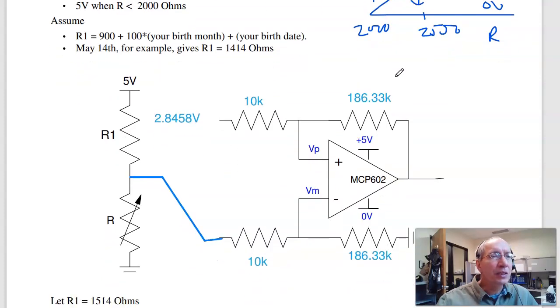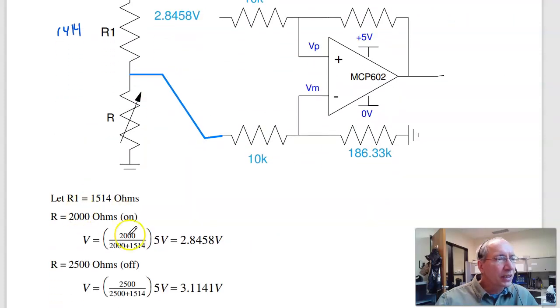Now the first step is convert resistance to voltage. Pick your favorite resistor. In this case it's based upon your birth date to make each test a little bit different. So this is 1414 ohms. Then the voltage at this point is going to be R1 over R1 plus R2 times 5 volts, 2.84 volts. At 2,500 ohms it's R1 over R1 plus R2 times 5 volts, 3.11 volts.